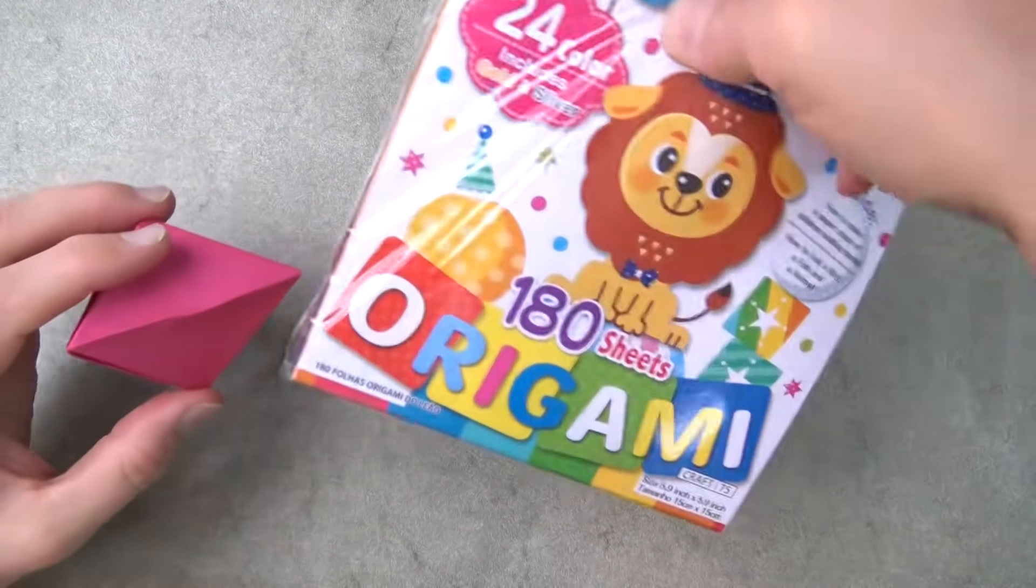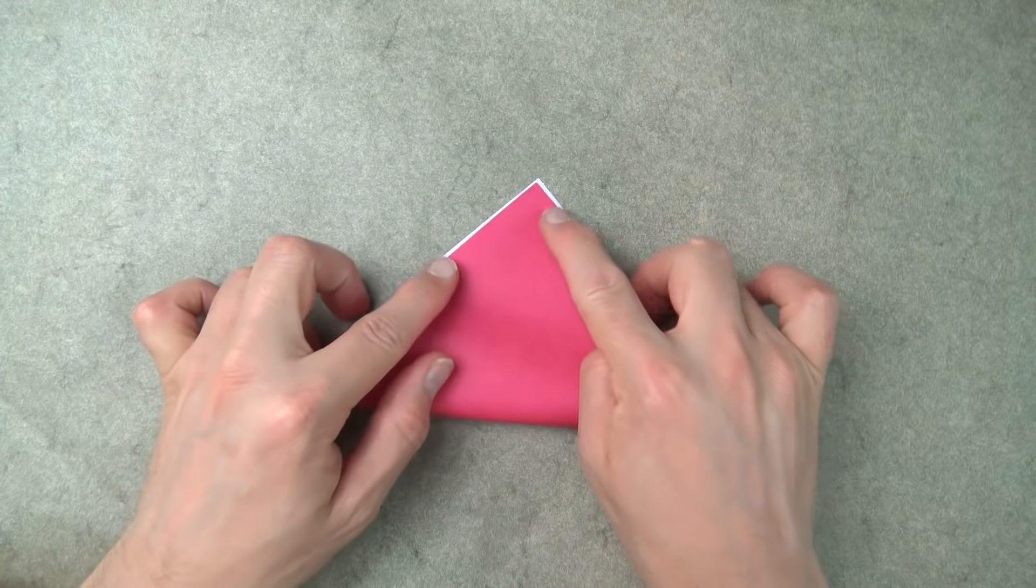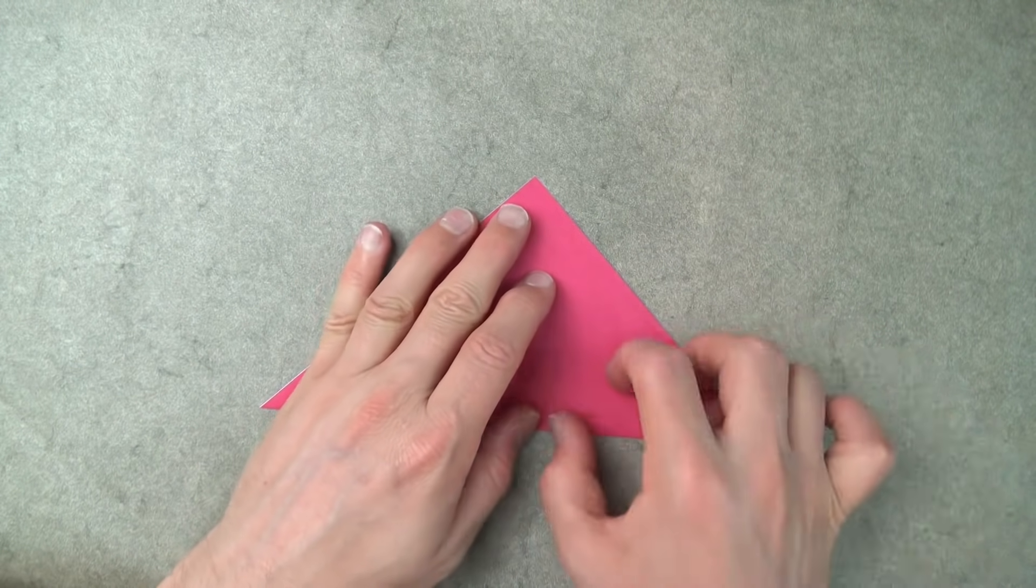For this hexahedron, I'm going to use a 6-inch square of Kami, but you can use a sheet of printer paper cut square. Begin white side up and fold in half diagonally. Try to make really precise folds and crease sharply.